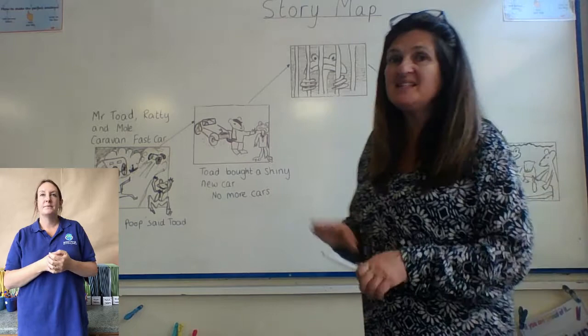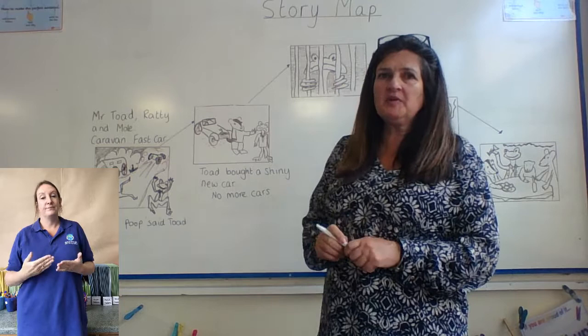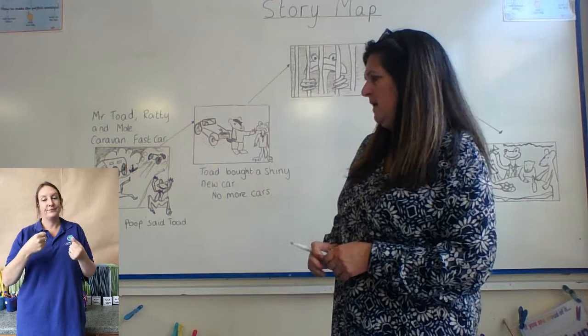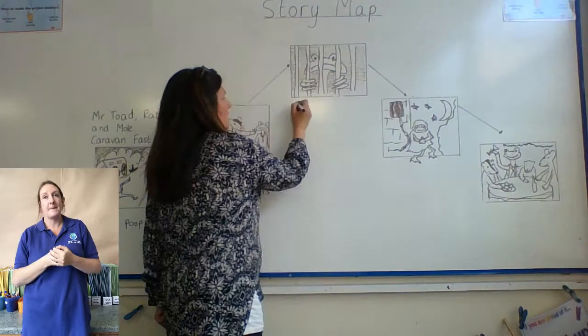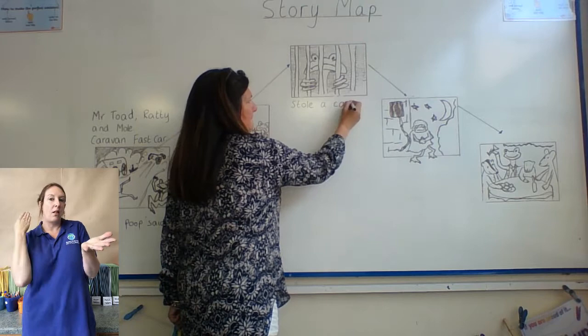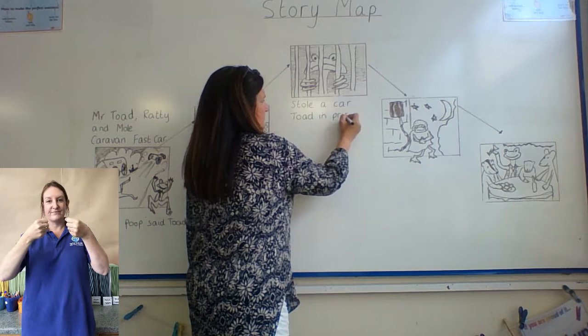Toad was cross with his friends because he wanted a car and they said no, but he wanted one. So he decided to steal a car. But as we all know, if you steal something there's always a consequence, and there was a consequence for Mr Toad — he was sent to prison. This is a picture here of Mr Toad in prison. So to remind me, I'm going to write 'Mr Toad stole a car' and 'Toad in prison.'